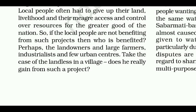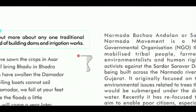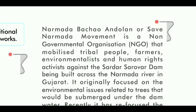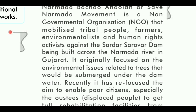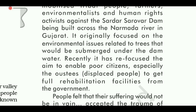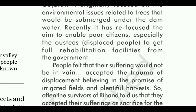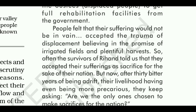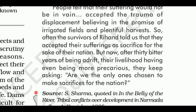The Narmada Bachao Andolan, or Save Narmada Movement, is a non-governmental organization that mobilized tribal people, farmers, environmentalists, and human rights activists against the Sardar Sarovar Dam being built across the Narmada River in Gujarat. It originally focused on environmental issues related to trees that would be submerged. Recently it has refocused to enable poor citizens, especially the displaced, to get full rehabilitation from the government. As survivors of Rihand told us: 'We accepted our sufferings as a sacrifice for the nation. But after 30 bitter years adrift with our livelihoods more precarious, we ask — are we the only ones chosen to make sacrifices?'